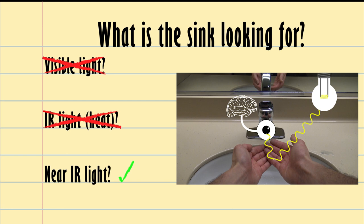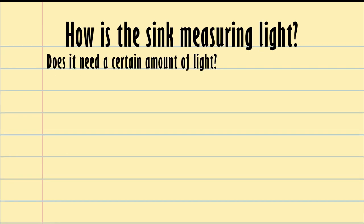But how? So if we go back to the eye example, instead of looking for the reflection of visible light, the sensor is probably looking for the reflection of infrared light. That means the sink probably has its own near infrared light that is pointing at our hands, and it's looking for the reflection of that near infrared light. Maybe the sensor is looking for a certain intensity of light.